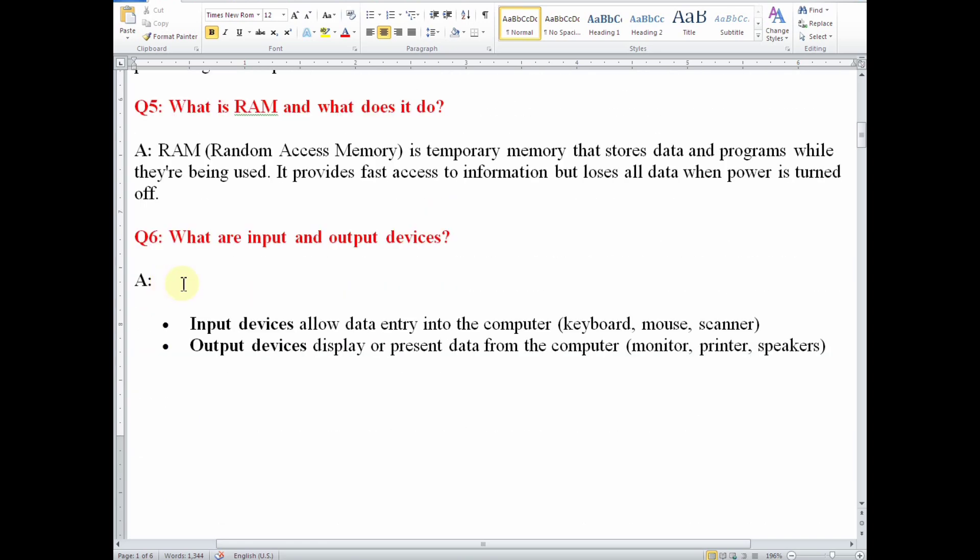Number six, what are the input and output devices? Input devices allow data entry into the computer. For example, you have keyboard, mouse, scanner, among others. Those are the examples of input devices. Output devices display and present data from the computer. Examples include monitor, printer, speakers, among other examples.